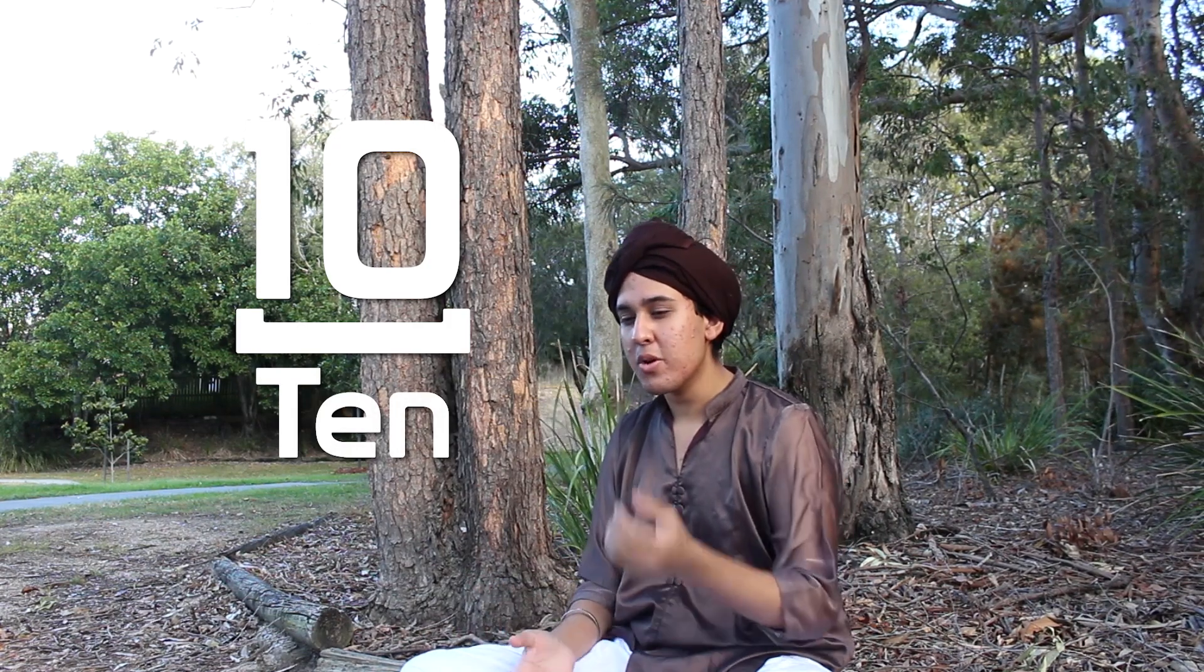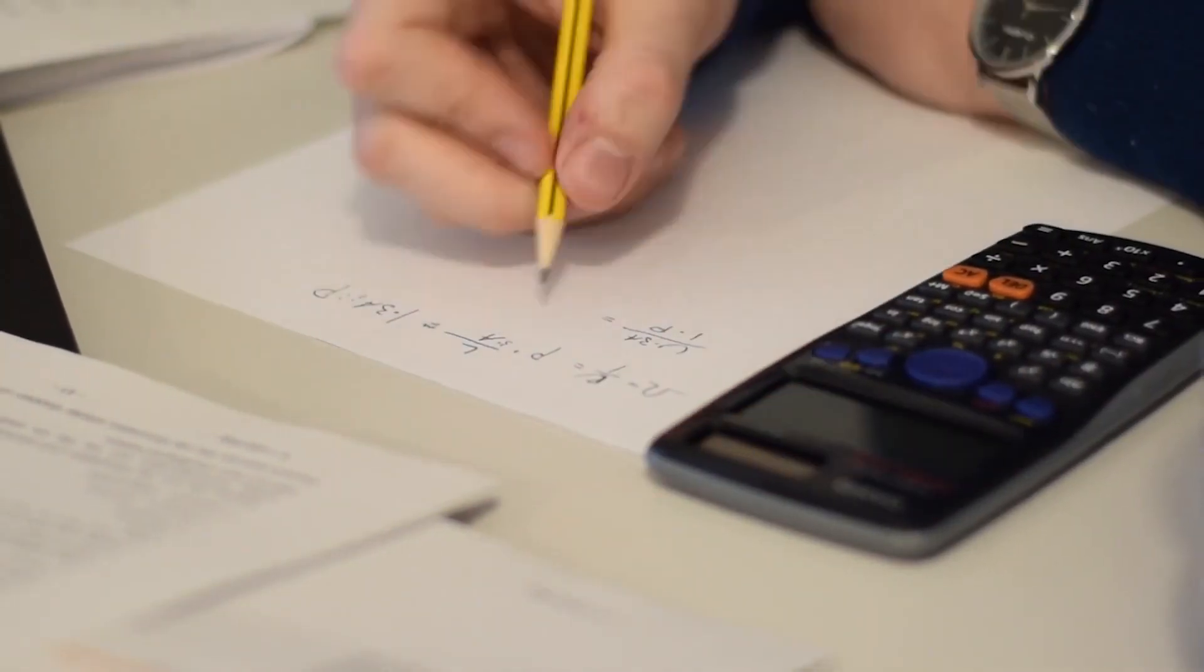Sounds crazy, right? But this way, if I put the 1 and the 0 next to each other, it shall create 10, not 11 or 9, because I want one lot of 10 and no lots of 1. Little did he know, by inventing zero, he would also invent the backbone for modern mathematics.